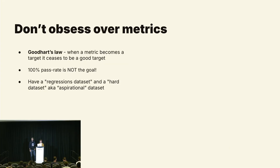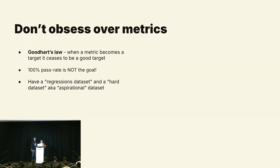A couple of closing thoughts: don't obsess over metrics. Remember that when a good metric becomes a target, it ceases to be a good target. When you're close to achieving 100% on your eval dataset, it doesn't mean you're doing a good job — it means your dataset is just not interesting, because we don't have AGI yet. We're experimenting with dividing the dataset into two pools: a regressions dataset to make sure changes don't break existing use cases, and an aspirational dataset of things that are extremely hard, like nailing 200 tool calls in a row.